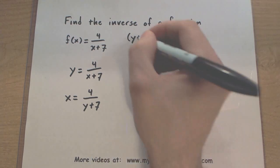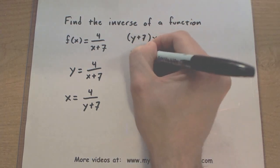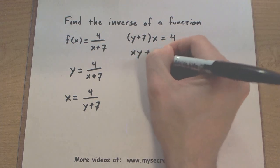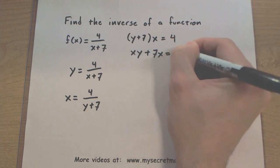And let's go ahead and distribute through by this x. So, x times y plus 7x equals 4.